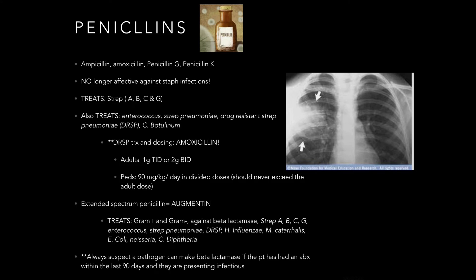For DRSP dosing: adults get one gram three times a day or two grams twice a day. For peds, it's weight-based — 90 mg per kilogram per day in divided doses. Important to note that a pediatric dose should never exceed an adult dose; if it does, just go to the adult dose. And then extended spectrum penicillin or Augmentin — amoxicillin with clavulanic acid — which we just talked about.